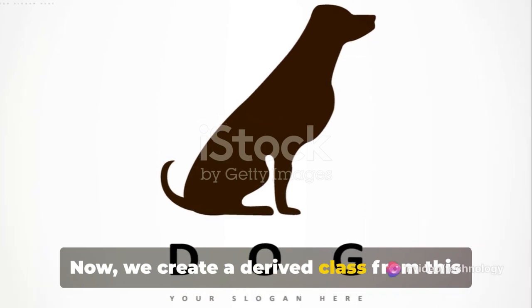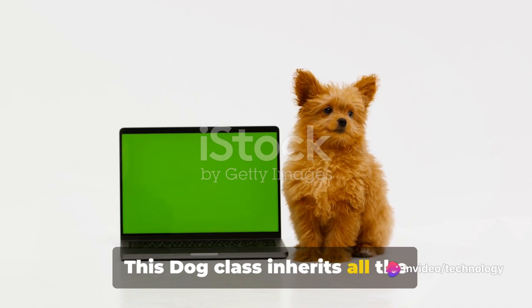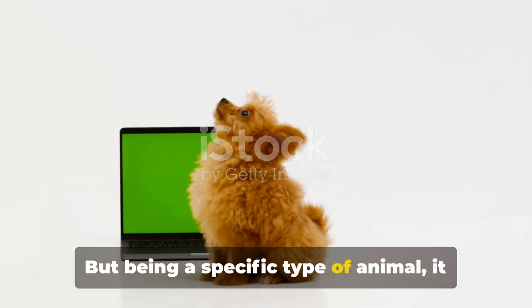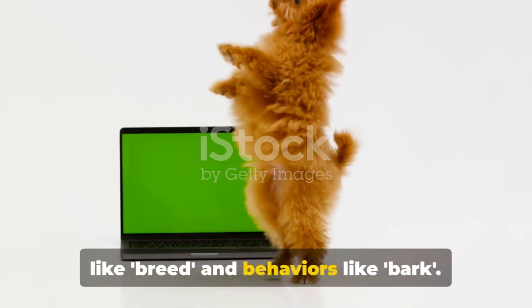Now, we create a derived class from this base class and call it Dog. This Dog class inherits all the attributes and behaviors from the Animal class. But being a specific type of animal, it can also have its own unique attributes like breed and behaviors like bark.